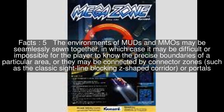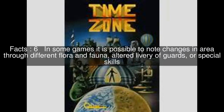The environments of MUDs and MMOs may be seamlessly sewn together, in which case it may be difficult or impossible for the player to know the precise boundaries of a particular area, or they may be connected by connector zones, such as the classic sight-line blocking Z-shaped corridor, or portals. In some games it is possible to note changes in area through different flora and fauna, altered livery of guards, or special skills.